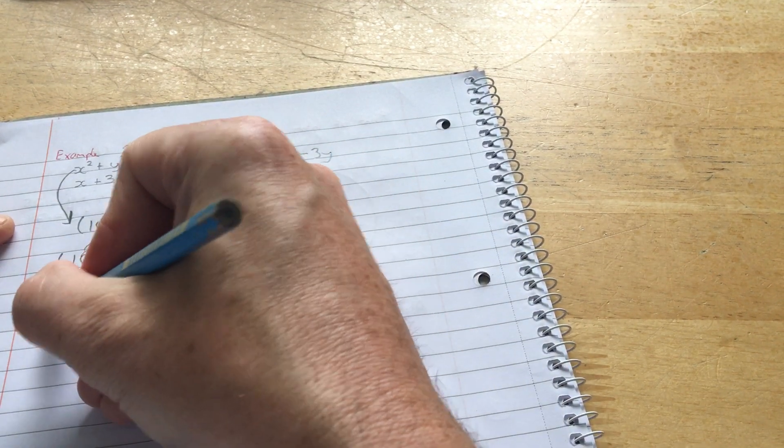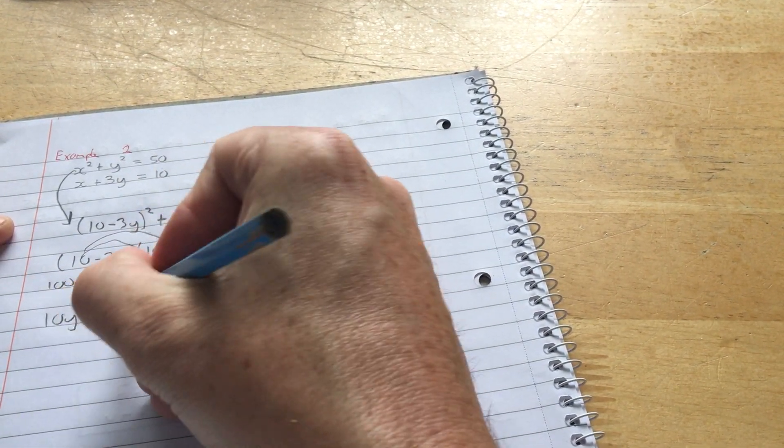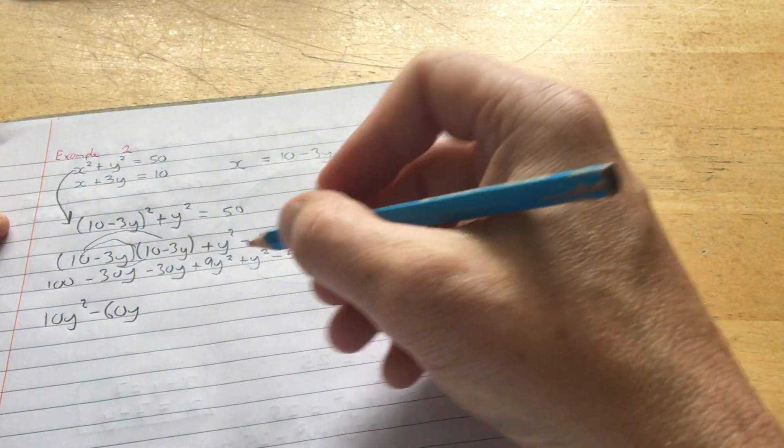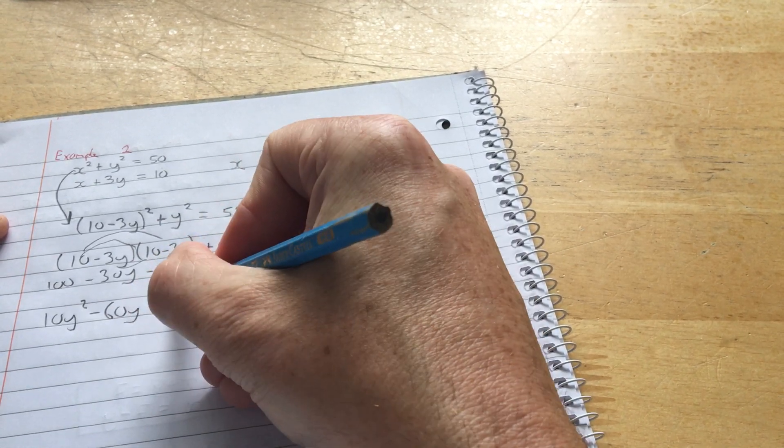Add your y squareds together. I get 10y squared. Add your y's together. I get minus 60y. And add your numbers together. So 100 take away 50 is plus 50.